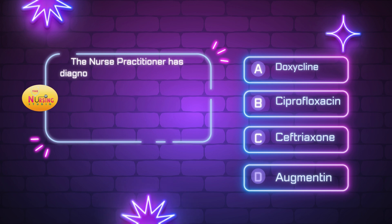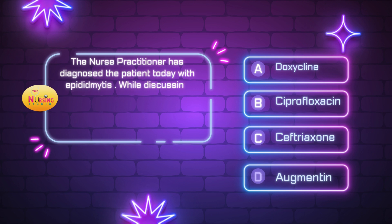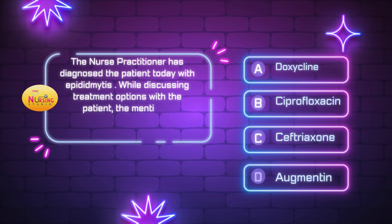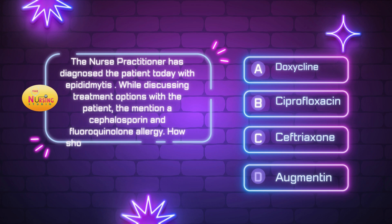Next, the nurse practitioner has diagnosed the patient with epididymitis. While discussing treatment options with the patient, the patient mentions a cephalosporin and fluoroquinolone allergy. How should the nurse practitioner treat? Is it A, doxycycline; B, ciprofloxacin; C, ceftriaxone; or D, augmentin? Take a moment and tell me what you think in the comments.